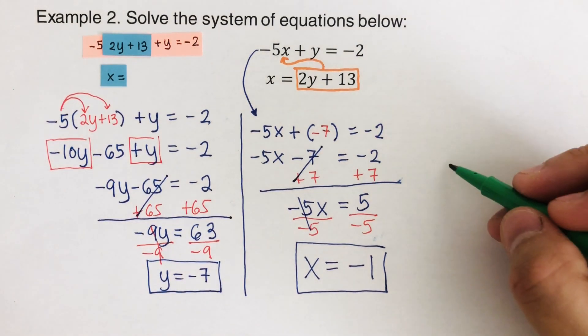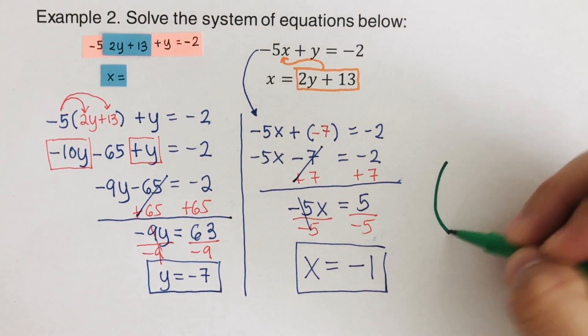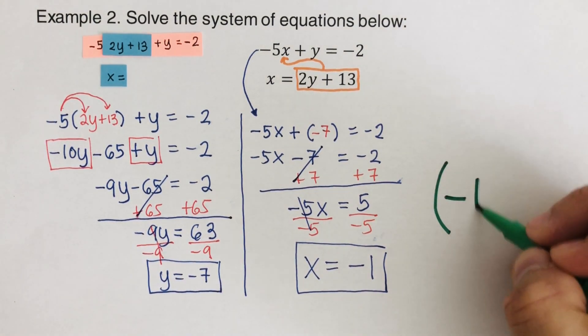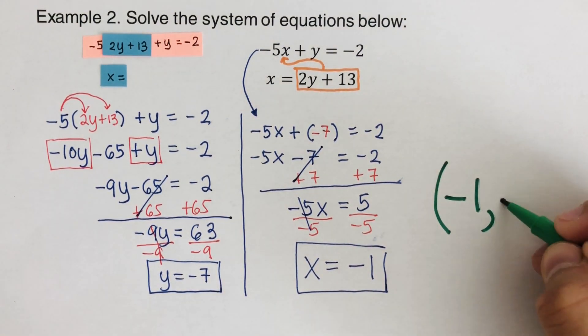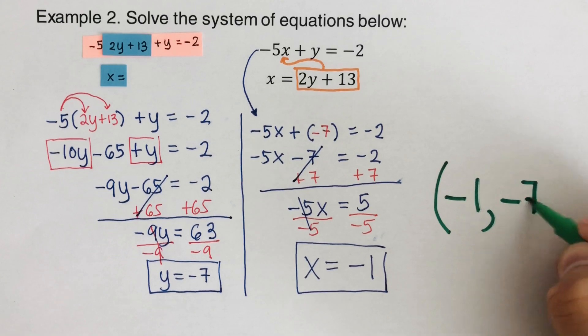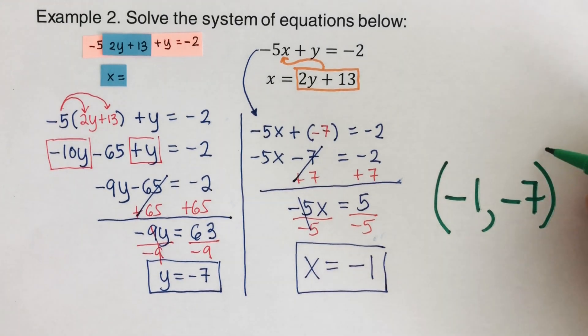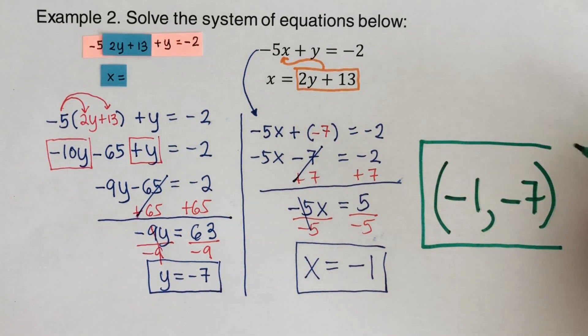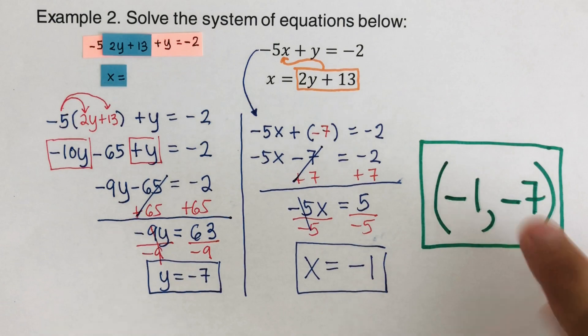It doesn't matter which of those two equations you use to solve for the other variable. The point of intersection and solution to this system would be (negative 1, negative 7). Did you get the same answer?